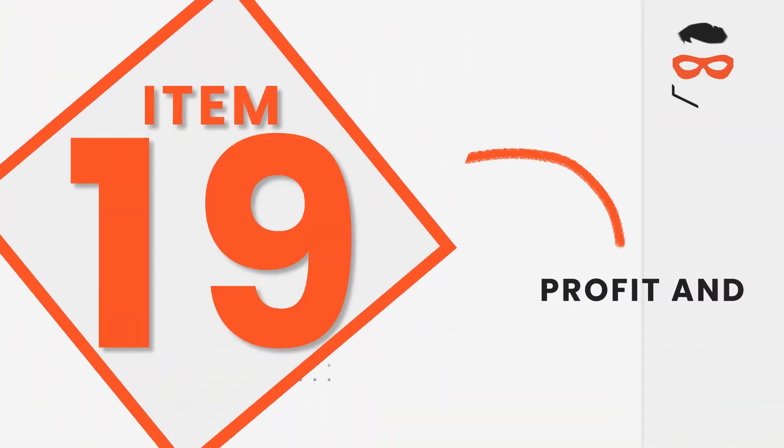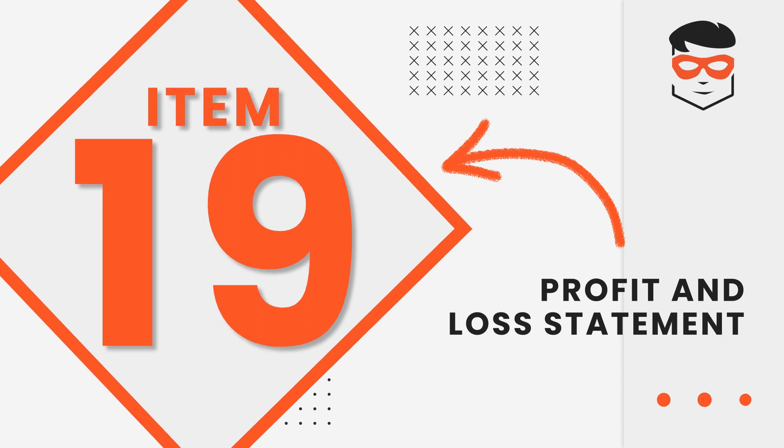Next, look into the P&L. Most franchisors will list out a profit and loss statement. You're going to want to look for any key expenses that may be missing. For example, if you know there's a royalty as part of your expenses but it's not showing up here, take that into account. Also, how do you plan on managing the business? Do you plan on having a manager run it for you? If so, is that showing up in the profit and loss statement as an estimated manager cost? Take all of these things into mind as you're reviewing both sales and profitability inside your Item 19.